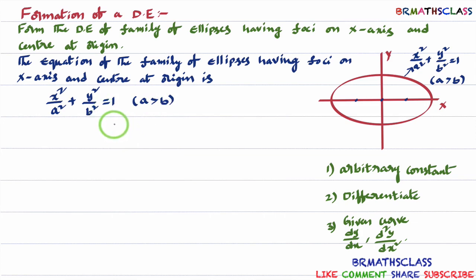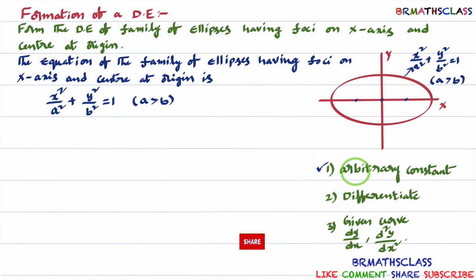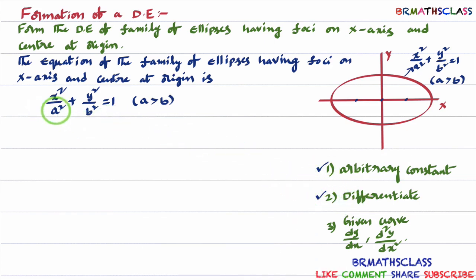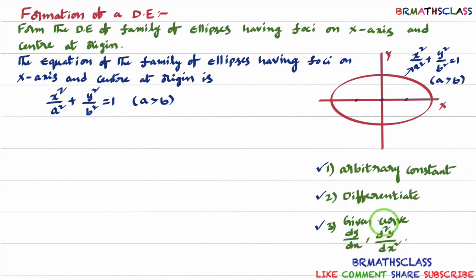Once you got the equation of the ellipse, we need to form the differential equation of this curve. To form a differential equation of the given curve, we remember three steps. Step one: identify the number of arbitrary constants present in the given equation. Step two: differentiate that many times. In the process of differentiation, we will try to eliminate the arbitrary constants. After differentiation, if arbitrary constants are eliminated, well and good. Otherwise, we'll use step three — any one, two, or all three things to eliminate arbitrary constants.